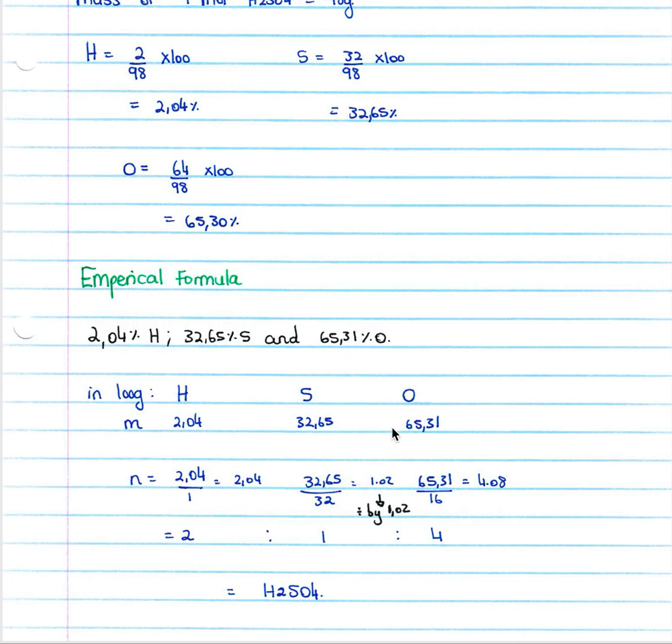And we will simply work out our moles by using n equals m over M_r, so our mass over molar mass. We then get 2.04 moles of H, 1.02 moles of S, and 4.08 moles of O oxygen.